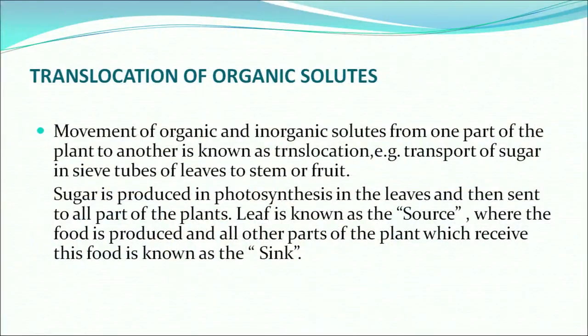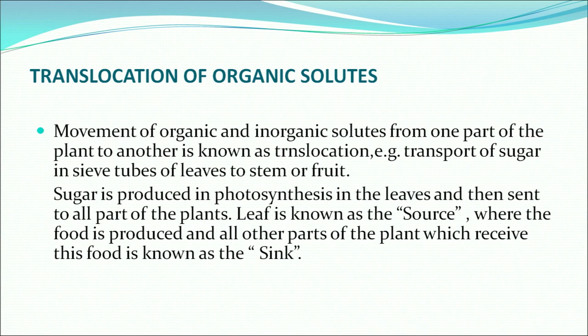How does translocation happen? Once photosynthesis is done by plant leaves, the food prepared must be transported or translocated to different parts of the plant. This translocation is of organic solutes — the movement of organic and inorganic solutes from one part of the plant to another is known as translocation. For example, transport of sugar in sieve tubes from leaves to stem or fruit. Leaf is known as the source — the kitchen of the plant — and all other parts of the plant which receive the food are known as the sink.